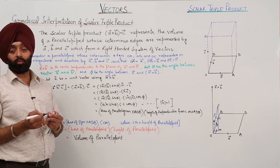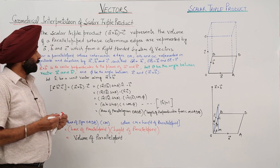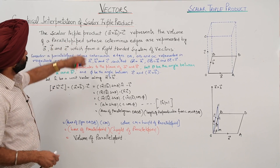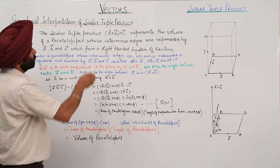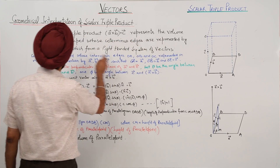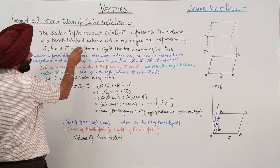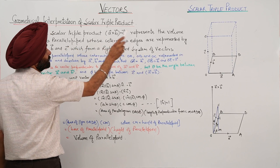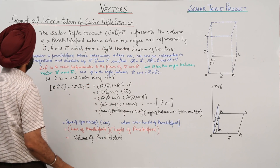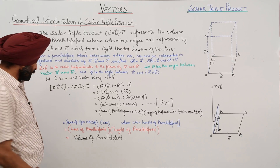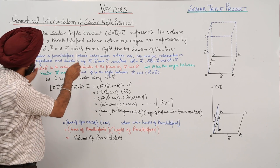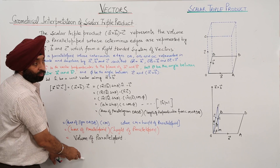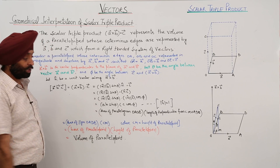So this is all about the result. Once again: the scalar triple product A cross B dot C represents the volume of a parallelepiped whose coterminous edges are represented by vectors A, B, and C. Geometrically, we have shown that this equals the volume of the parallelepiped.